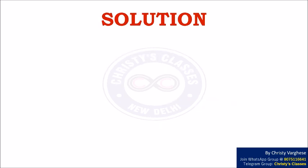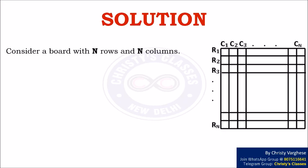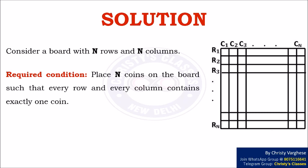Solution: Consider a board with N rows and N columns. We are required to place N coins on the board such that every row and every column contains exactly one coin. Let us try to place the coin column wise.